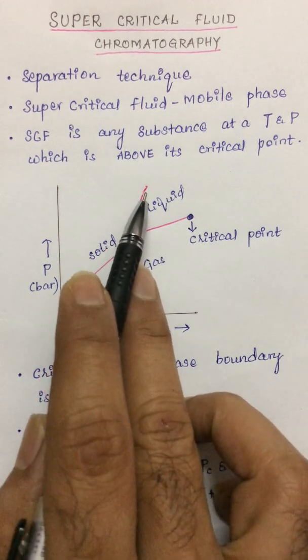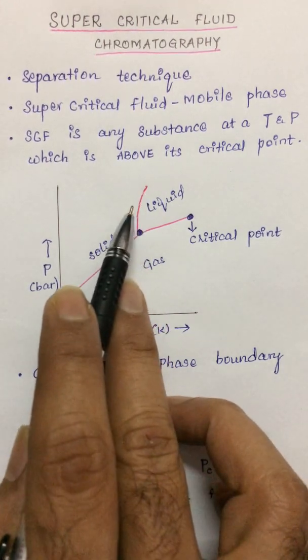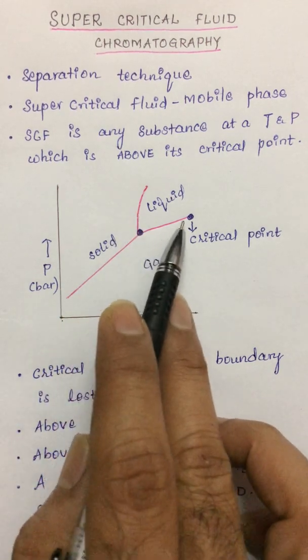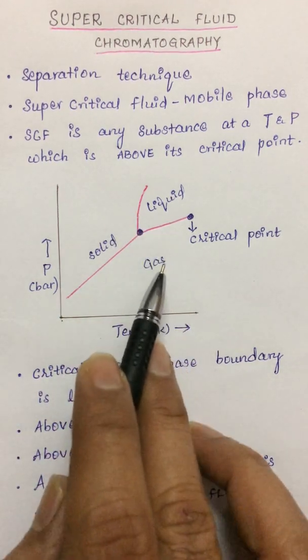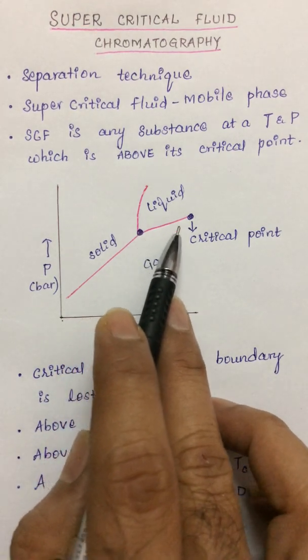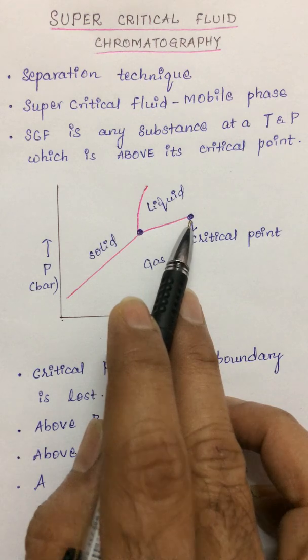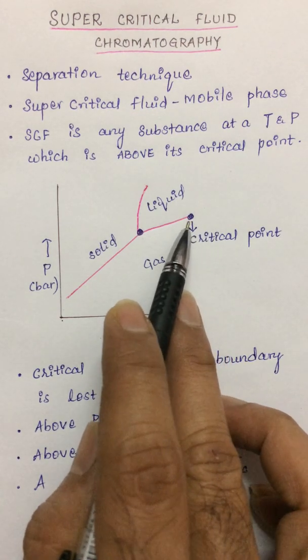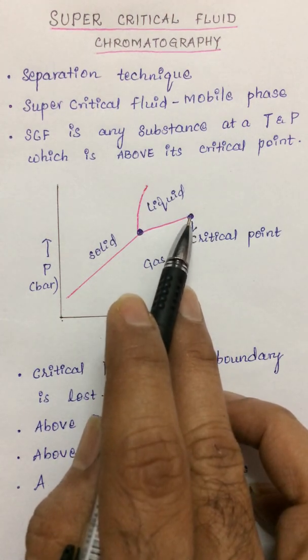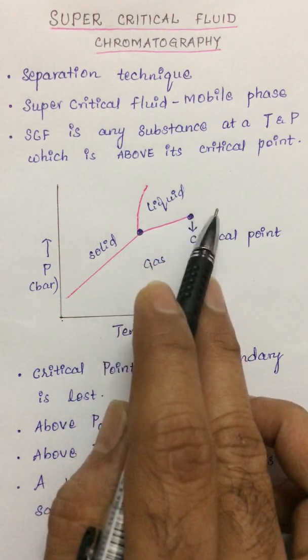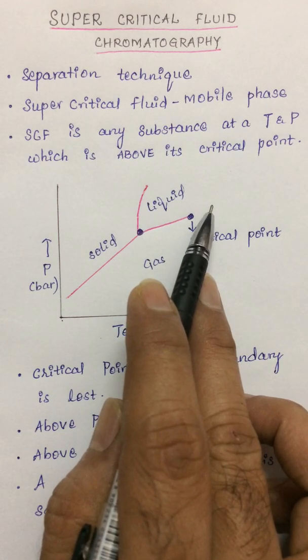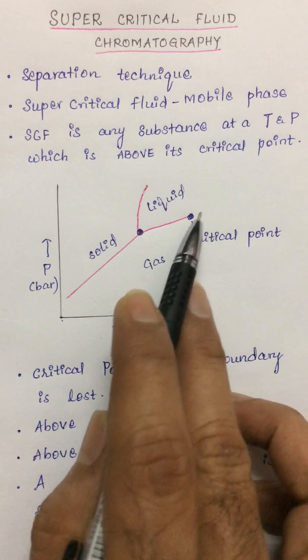At any point over this line or curve, solid and liquid can exist in thermodynamic equilibrium. And any point over this, liquid and gas can exist in equilibrium. As we proceed to some point beyond this point, now this no more acts as a liquid. Or beyond this point, this no more acts as a gas. All this region is considered to be a critical region, a region for a critical fluid.